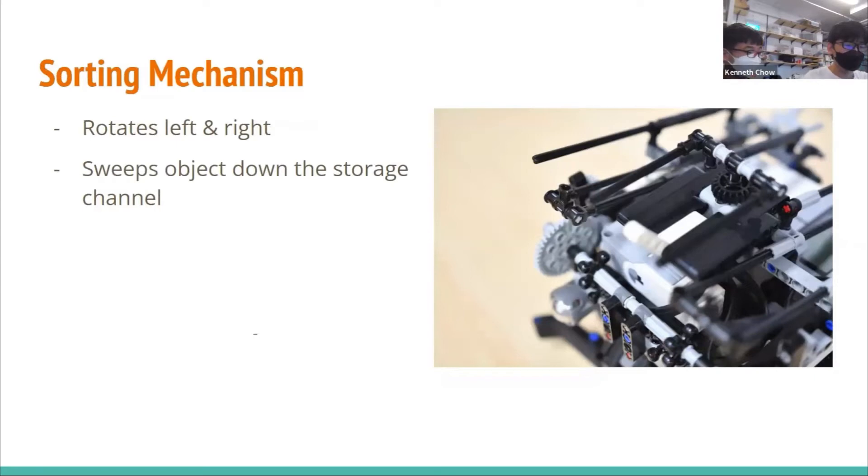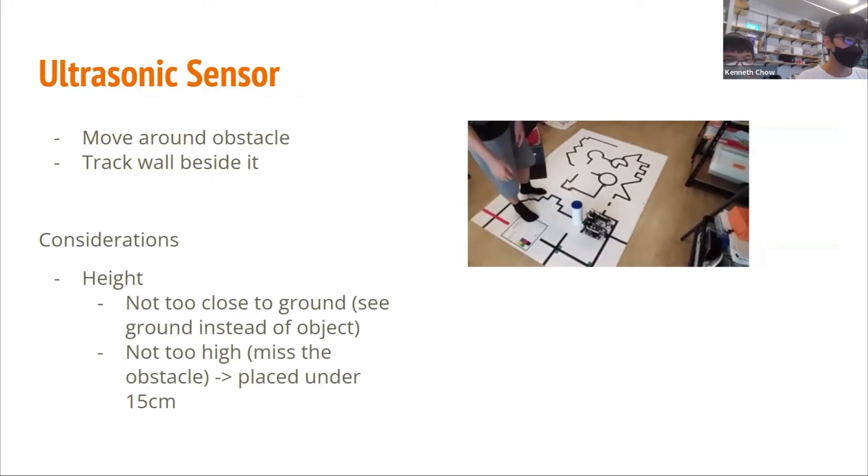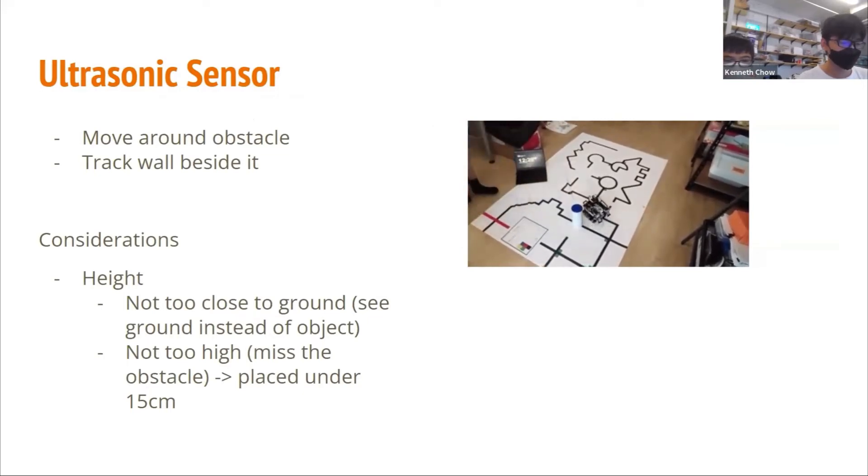This is the sorting mechanism. As you can see, it is a medium motor mounted vertically so that it can rotate the two chunks, and not only sort the object, but it can also push the object further into storage in case it gets stuck in storage. When there is an object in front, the ultrasonic sensor will help detect the object as it moves around the obstacle.